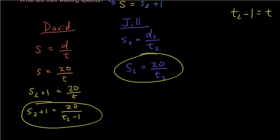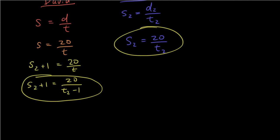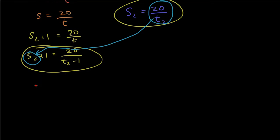How do we solve it? We're going to make something the subject and then substitute it into the other equation. Let's substitute 20 over T2 into where S2 is in the other equation. So now I have 20 over T2 plus one equals 20 over T2 minus one. Very difficult right now, but we should be able to do it.